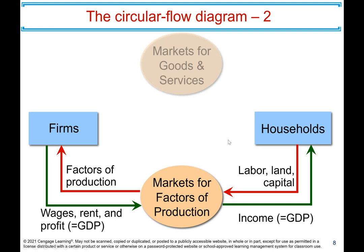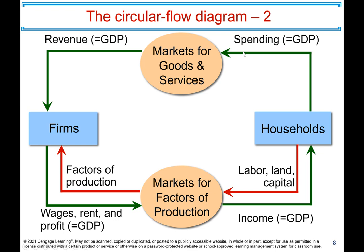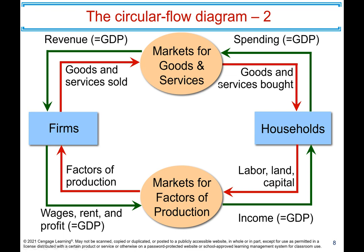The other market they interact in is the goods market — the market for goods and services. Households spend their income on goods and services, and business firms receive this income in exchange for the goods and services they produce. That is the circular flow diagram.